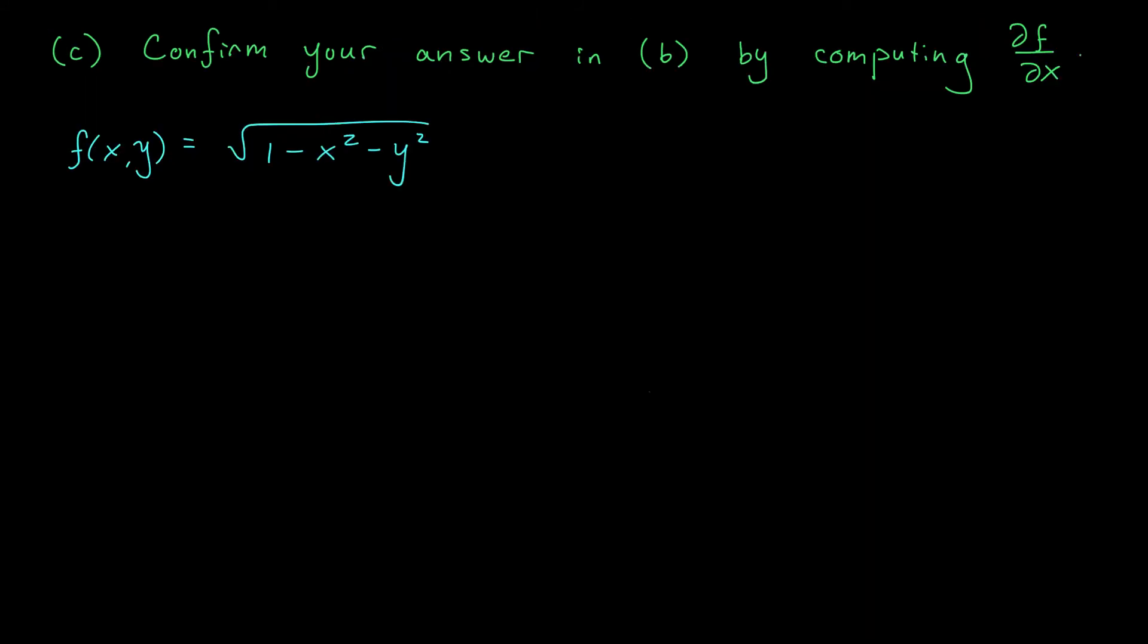Once again, we're looking for all points where the partial derivative of f with respect to x is equal to zero, but now we're actually allowed to compute this partial derivative. As a reminder, our function is given by f(x,y) equals the square root of 1 minus x squared minus y squared. To find the partial derivative with respect to x, we treat y as constant and take the derivative as normal.